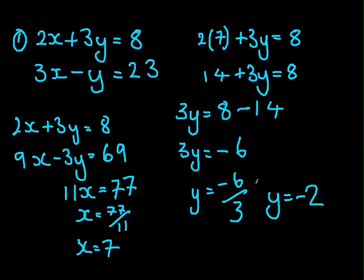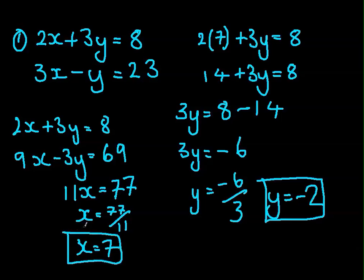And those are our answers. Minus 2 and 7. And whenever you do these questions, you should always check by putting them back into the equation. So 2 times x equals 14. And 3 times minus 2 equals minus 6. So 14 plus minus 6 equals 8. And you would do it with this as well. So you would do 7 times 3 equals 21 minus minus 2, which equals 23. And we know that these are both right.